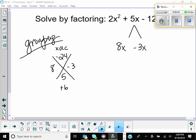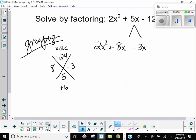And then I'm going to bring down the original first term, 2x squared, and the last term, minus 12. And now that I have 4 terms, this is where the grouping part comes in. I have 4 terms, so I group the first 2 together, the second 2.